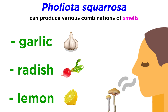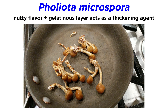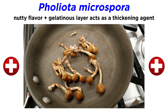Pholiota squarrosa can produce combinations of smells of garlic, radish, and lemon. Another important species of Pholiota is Pholiota microspora, or the nameko mushroom. Widely cultivated in Japan, nameko has a delicious nutty flavor and a gelatinous layer on the cap that acts as a thickening agent for stir fries or miso soup. The mushroom is suspected to have medicinal benefits as well.